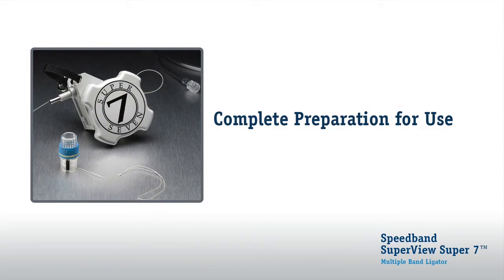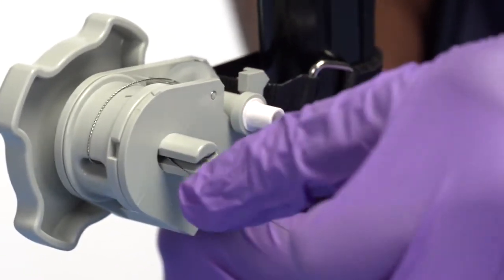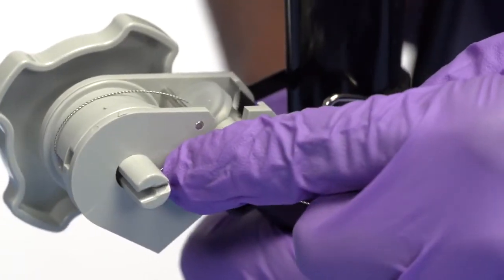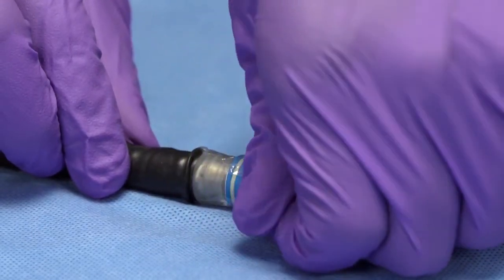Complete preparation for use. Grasp the tripwire and retract to remove the slack. Then lock down by pulling across the narrow slot. Do not over tighten. Carefully remove the shrink wrap by hand.